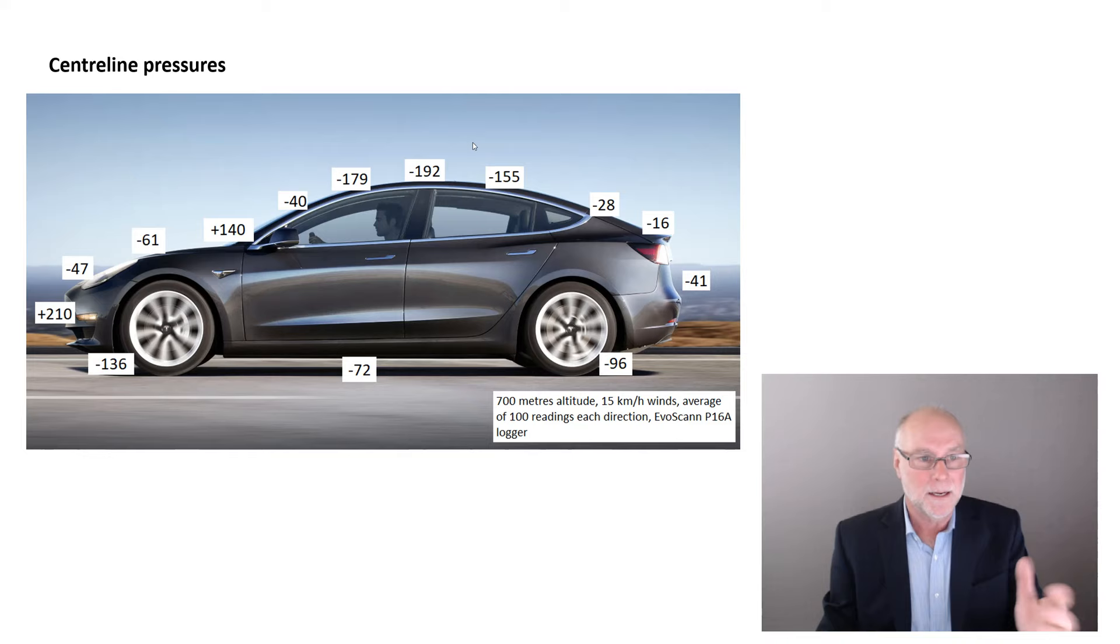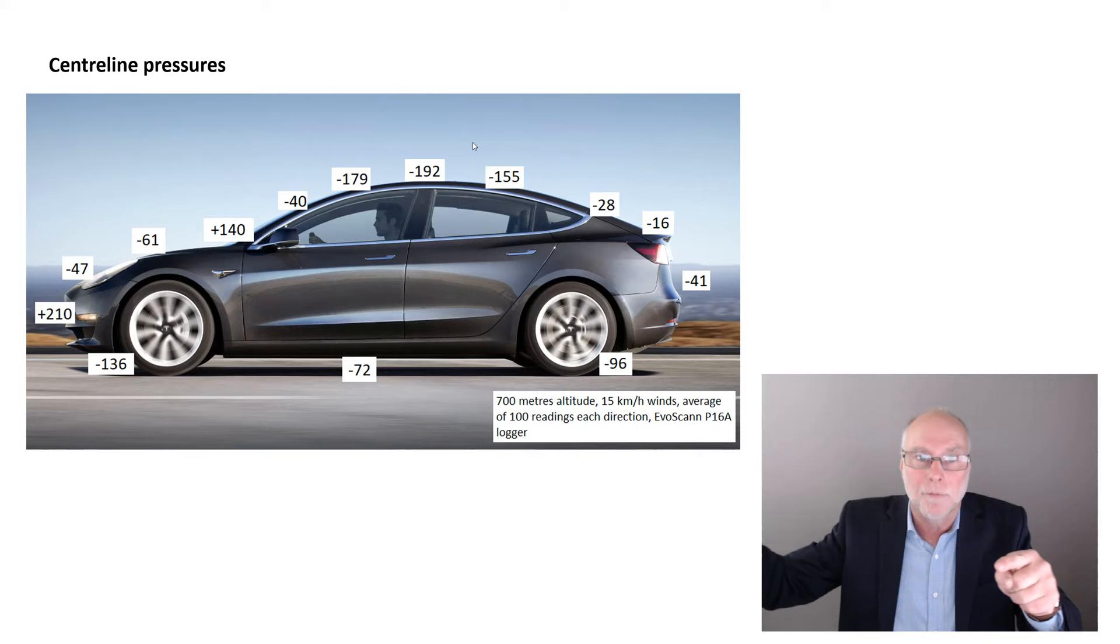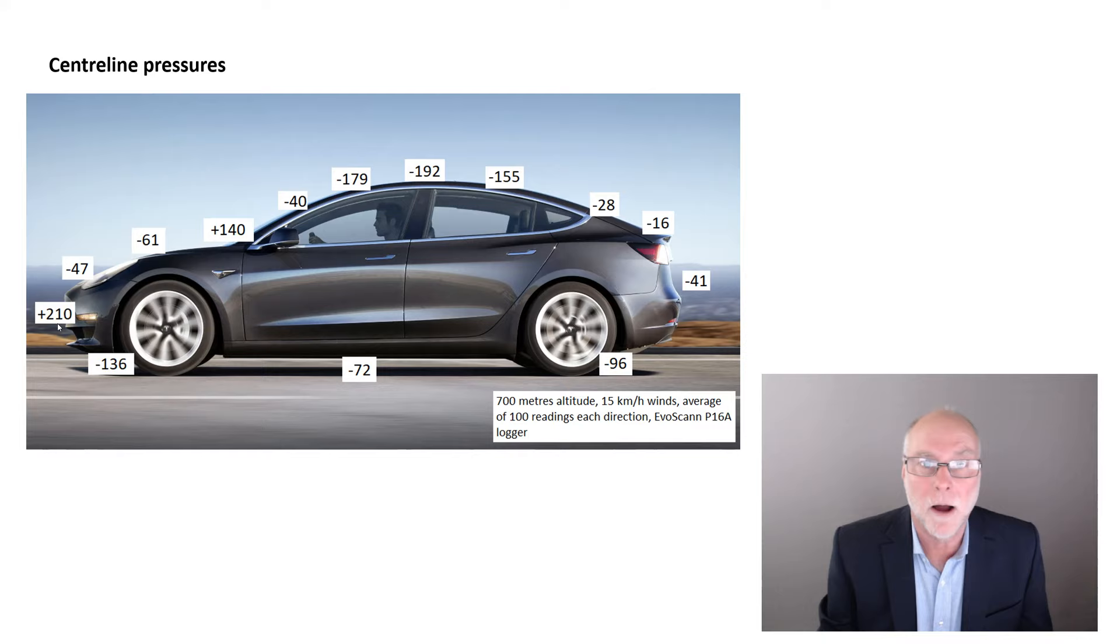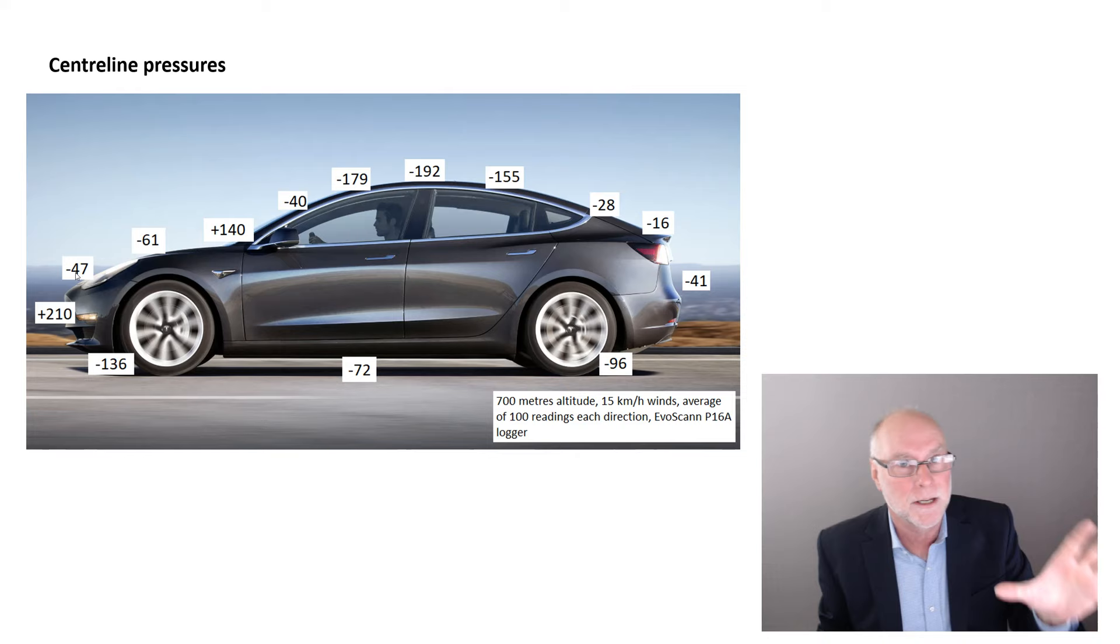We do have the ability to see those pressures. In my book, I cover in some detail how you can actually measure those aerodynamic pressures that are acting on the bodywork. And here, on this Tesla Model 3, I have measured the pressures along the centre line of the bodywork. So, just as we saw a moment ago, at the front, there's a high pressure, where the air is brought to a halt. Plus 210, we'll just call them units. As the airflow wraps around the early part, the front part of the hood or bonnet, minus 47, less than atmospheric. A minus pressure is pulling on the bodywork. A plus pressure is pushing on the bodywork.